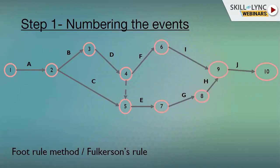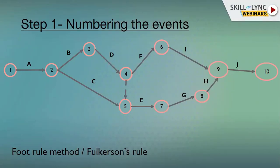Rule number one, step number one, is numbering the events. For Fulkerson's rule, we need to follow which states we start off the numbering of events from left and from top to bottom. This means the event on the left-hand side would be one, and as we move along, if there are two events falling on the same axis, the event which is higher along the Y-axis will have the lesser number.